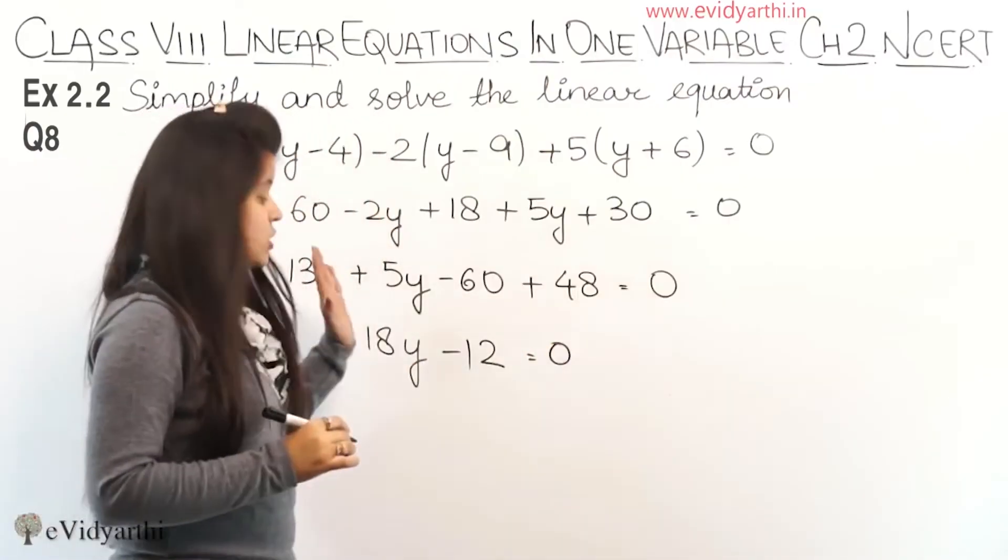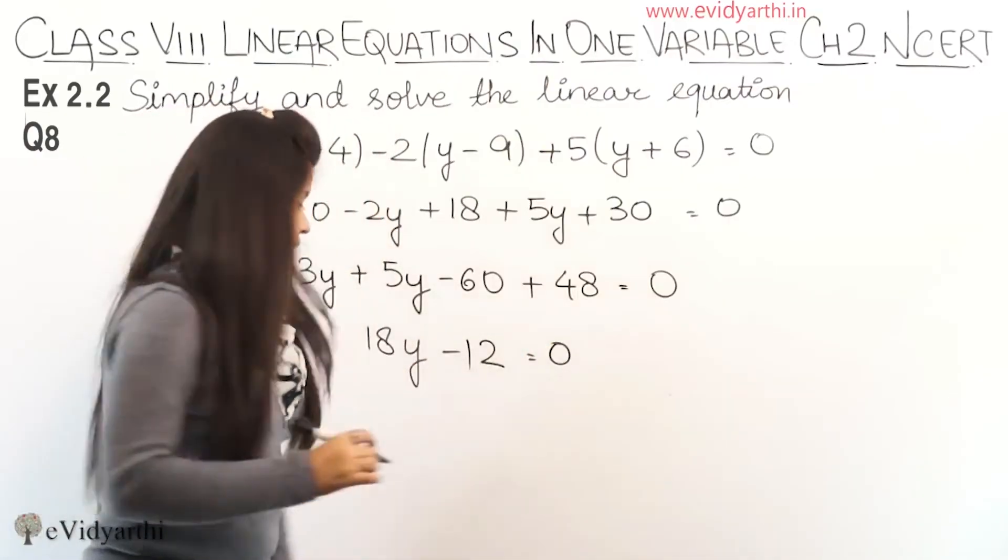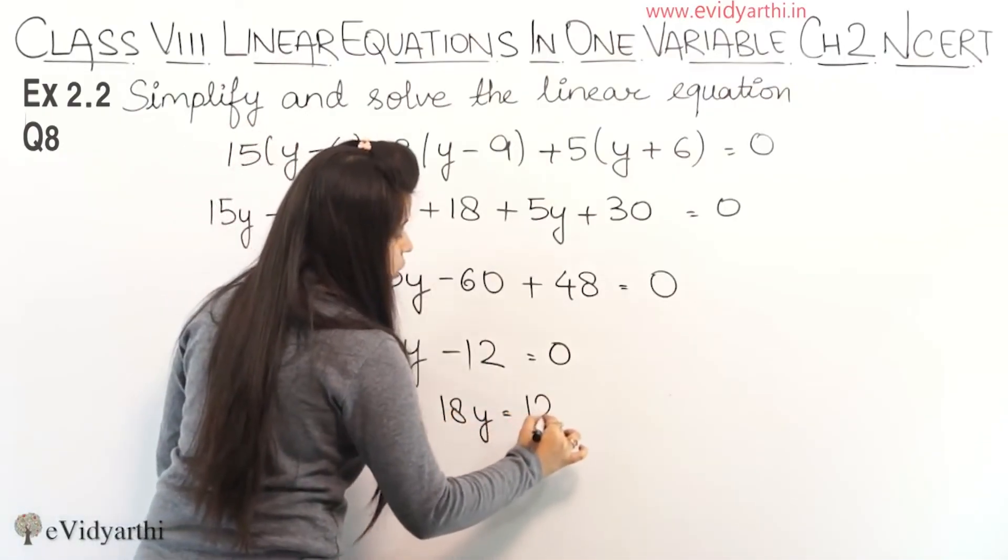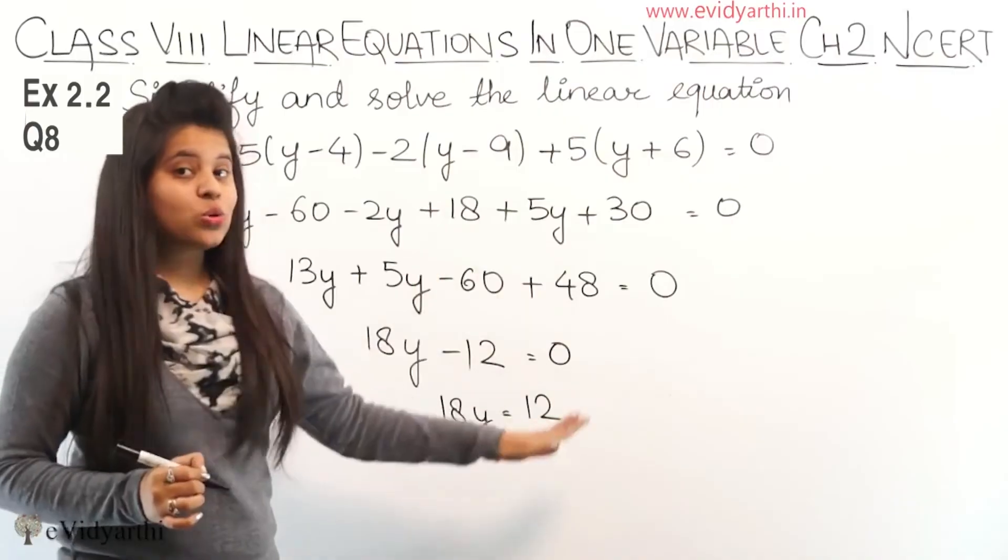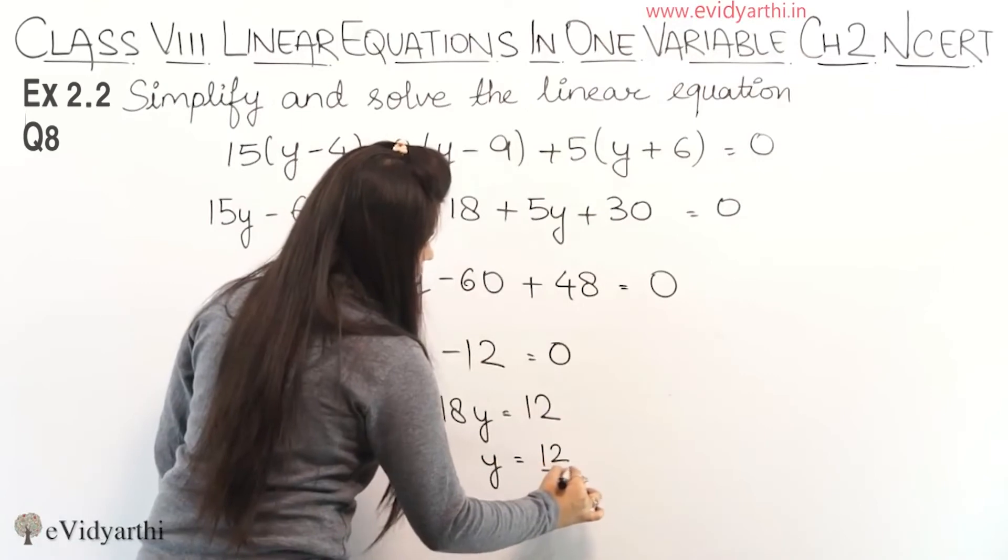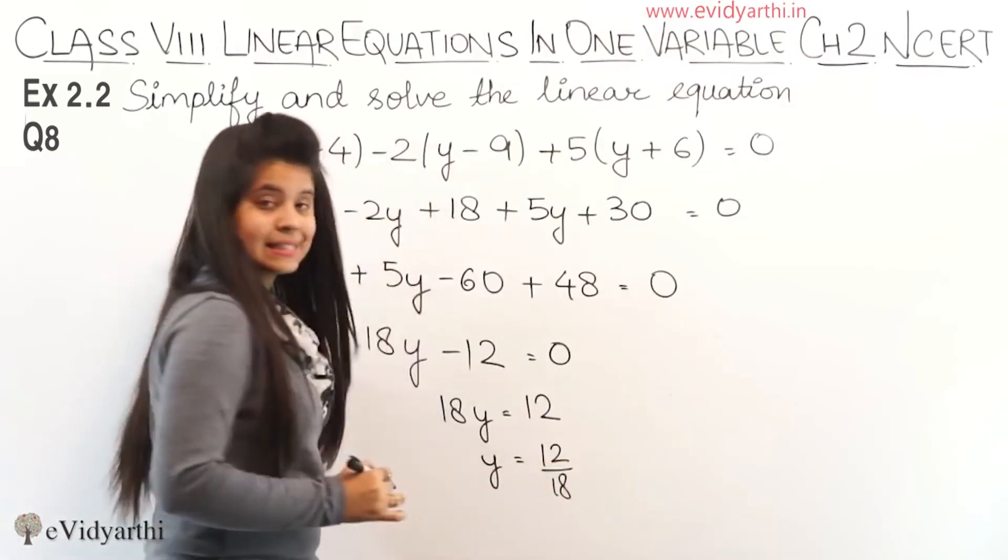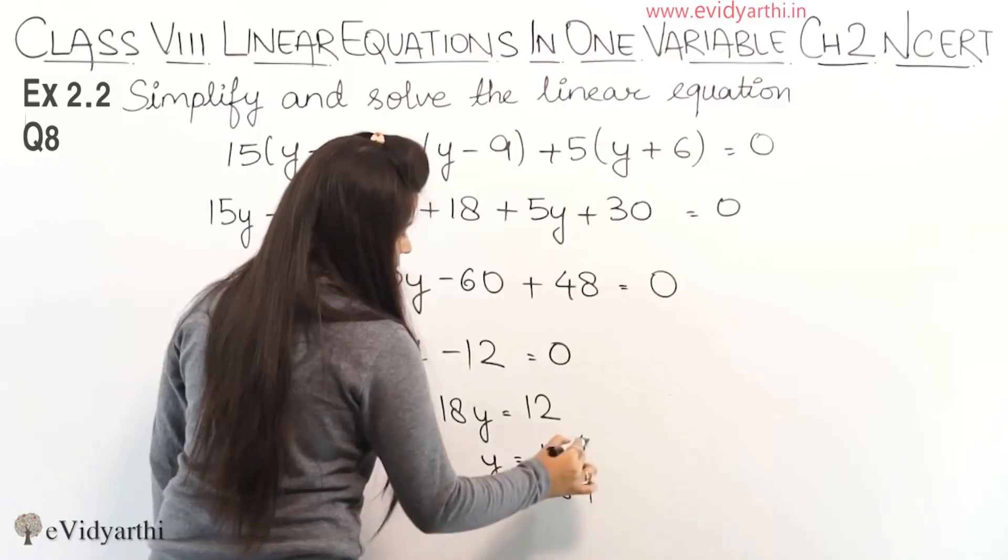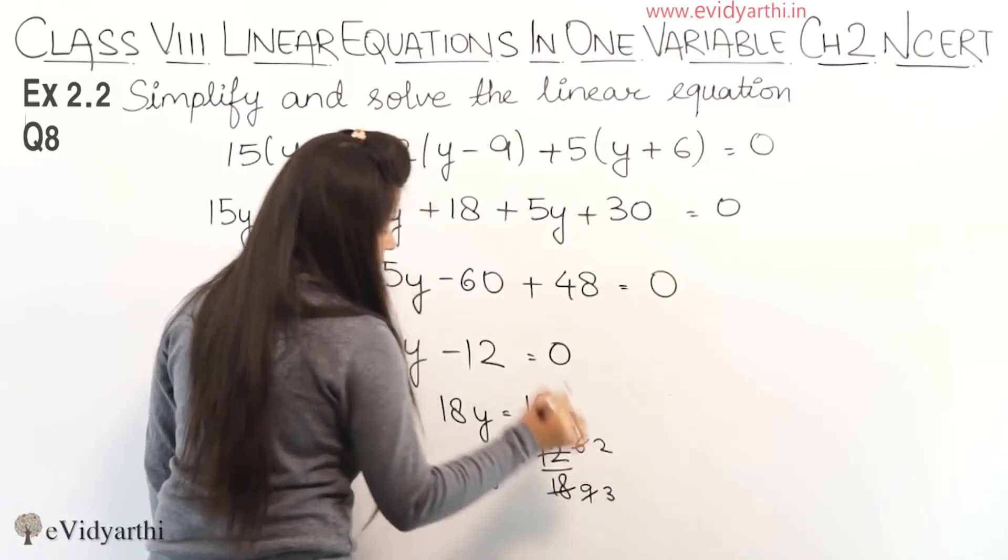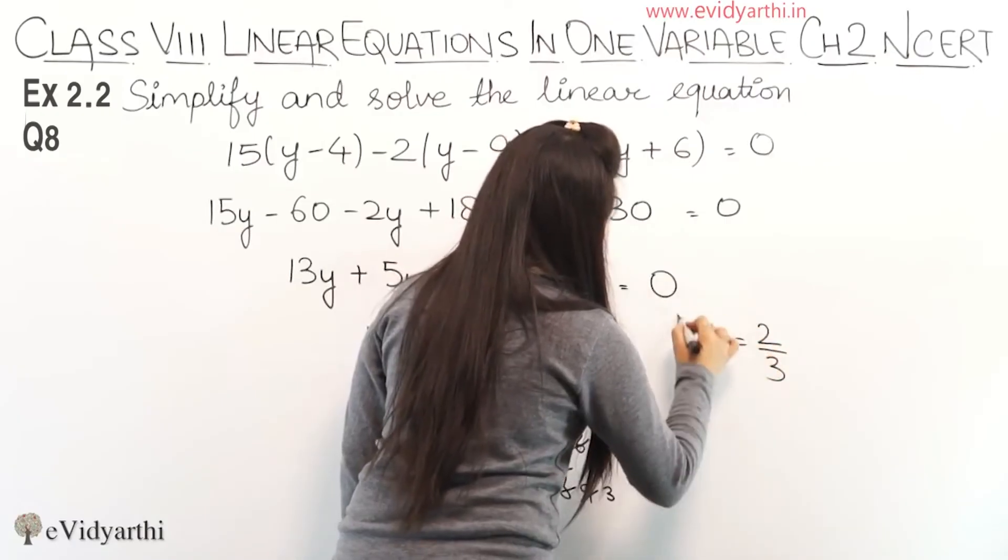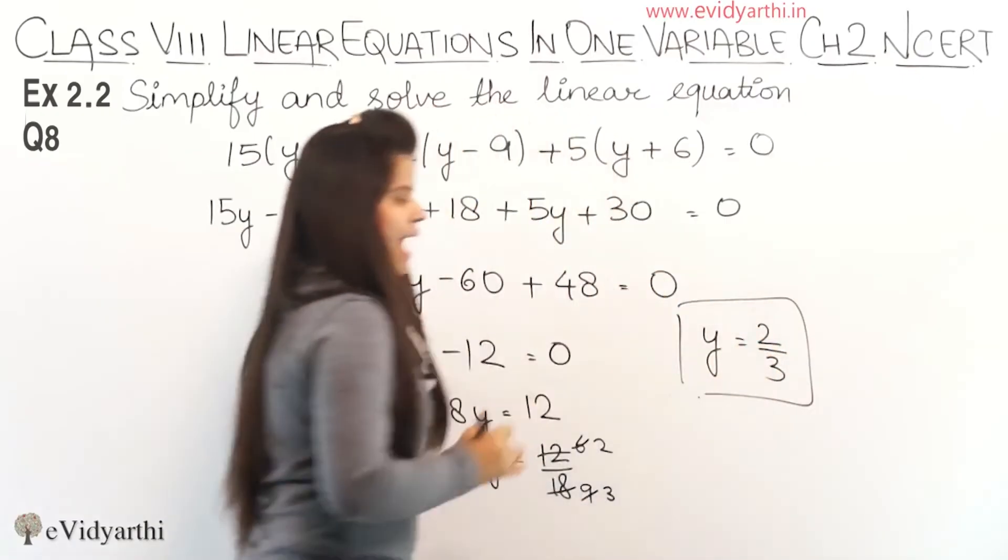Now we need to find y. So we'll move 12 to the other side. 18y equals 12. Minus 12 goes to the other side as plus 12. Now y equals 12 upon 18. When we cancel, this becomes 6, this becomes 9, this becomes 2, and this becomes 3. So y equals 2 upon 3, and this is the answer.